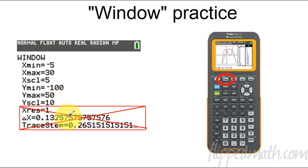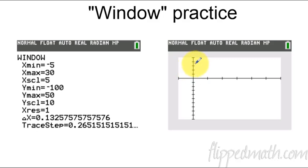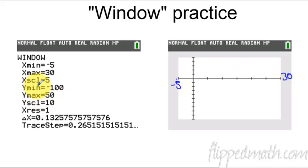Don't worry about the x residual part because none of that matters — some of your calculators won't even have that. Okay, you should have that entered. So what we have now is I want you to see how we can manually change what the graph screen looks like. If we say negative 5, that means that x minimum value is negative 5. The x maximum is 30, so the maximum side on the right is 30. If we say the x scale is 5, it means it's counting by 5 — so this would count 5, 10, 15, 20, 25, 30. That's what these little tick marks are doing — it's the scale.